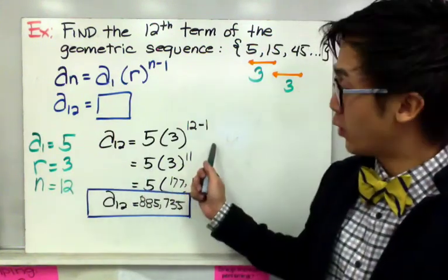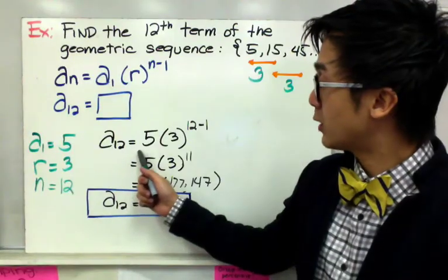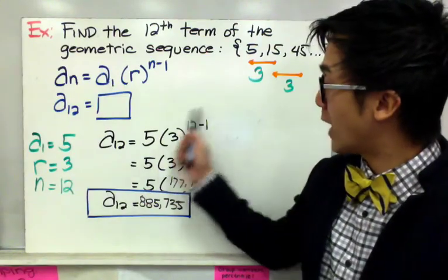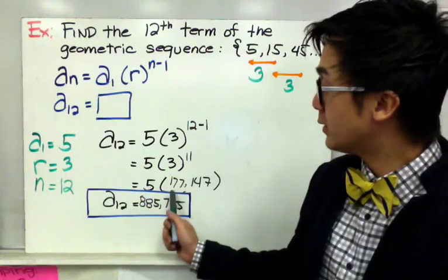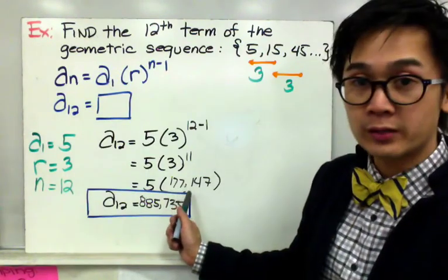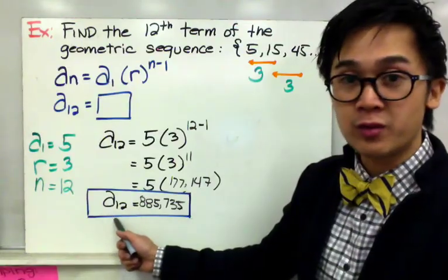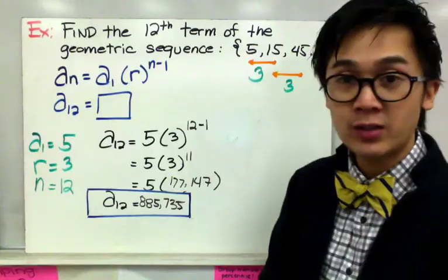Now to plug it into the formula we'll have a sub 12 which is the 12th term equal to 5 times 3 to the 12 minus 1. And evaluating our exponent, 3 raised to 11 will give us 177,147 multiplied by 5, and our 12th term for this geometric sequence will be 885,735.